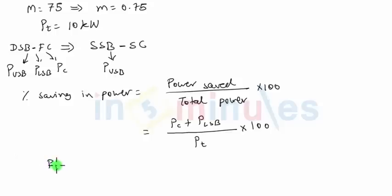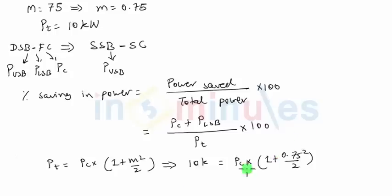Now the very first formula I can use is PT equals PC times (1 plus M squared by 2). This becomes 10 kilo equals PC, where M is given as 0.75. If you solve this, PC, which is the power in carrier, will come out to be approximately 7.8 kilowatts.